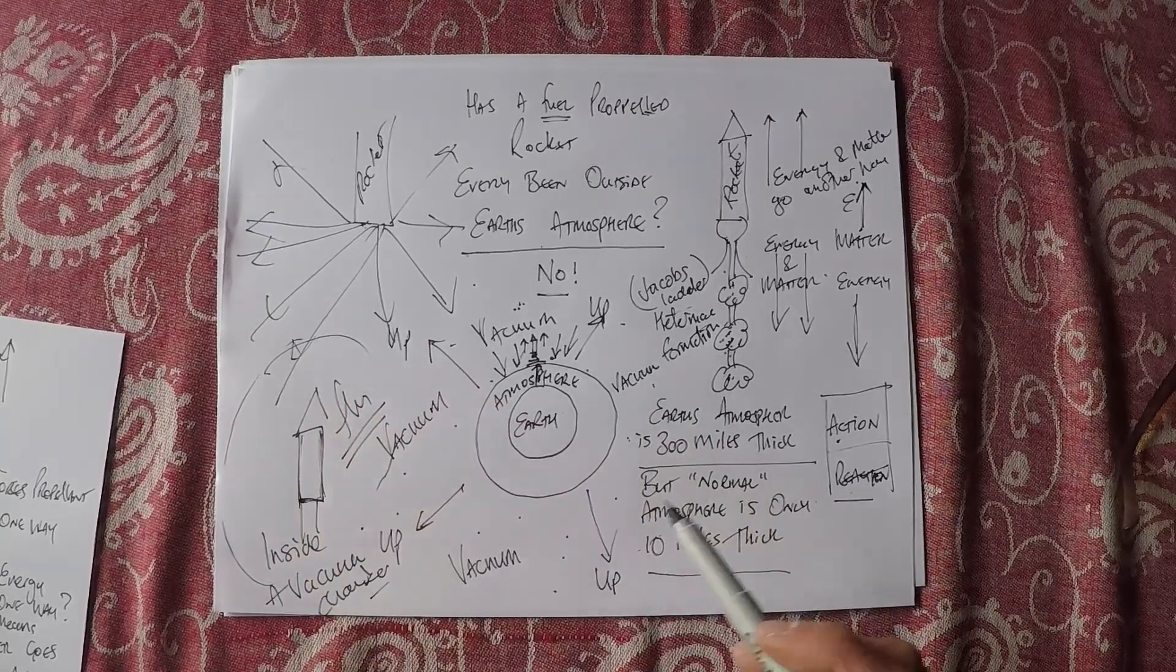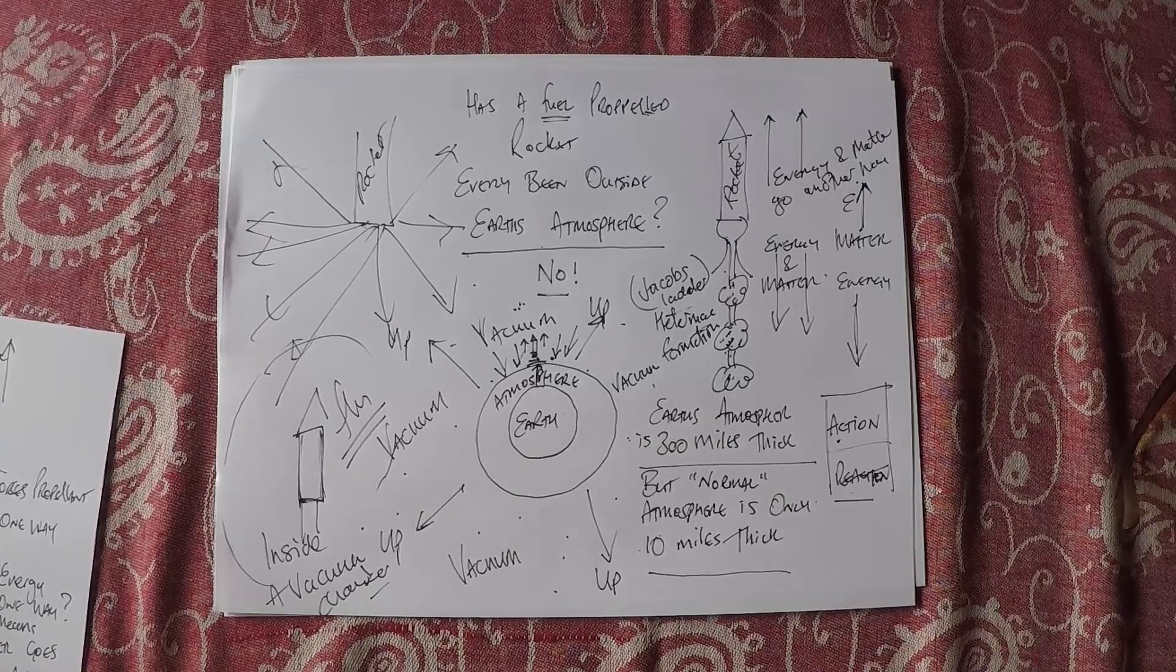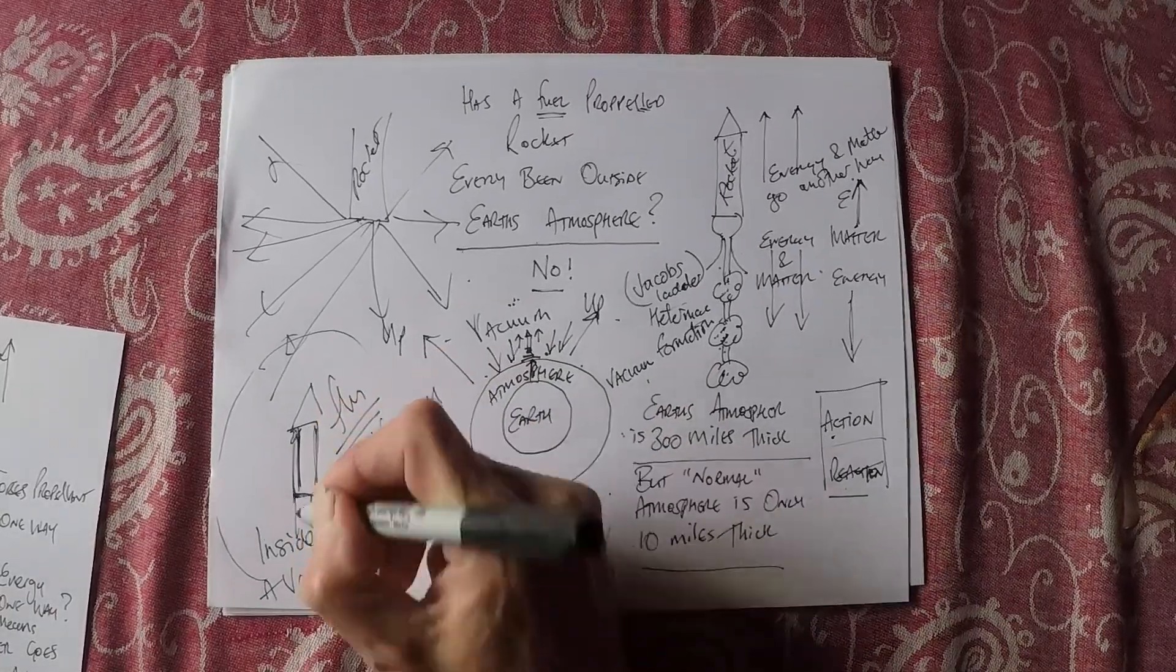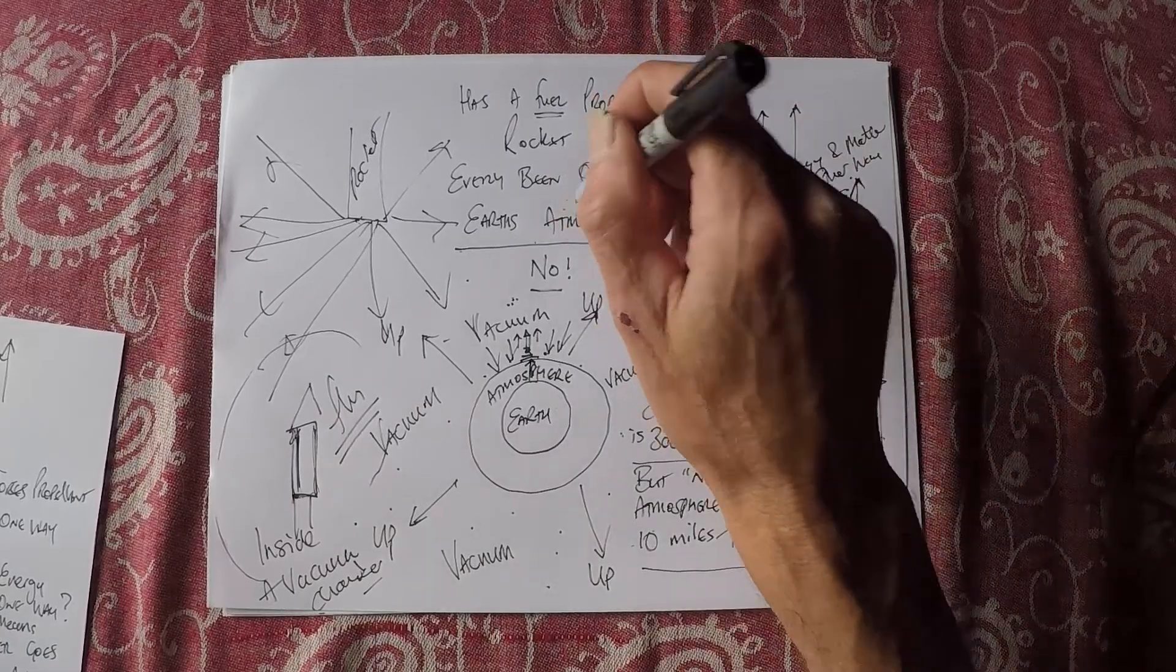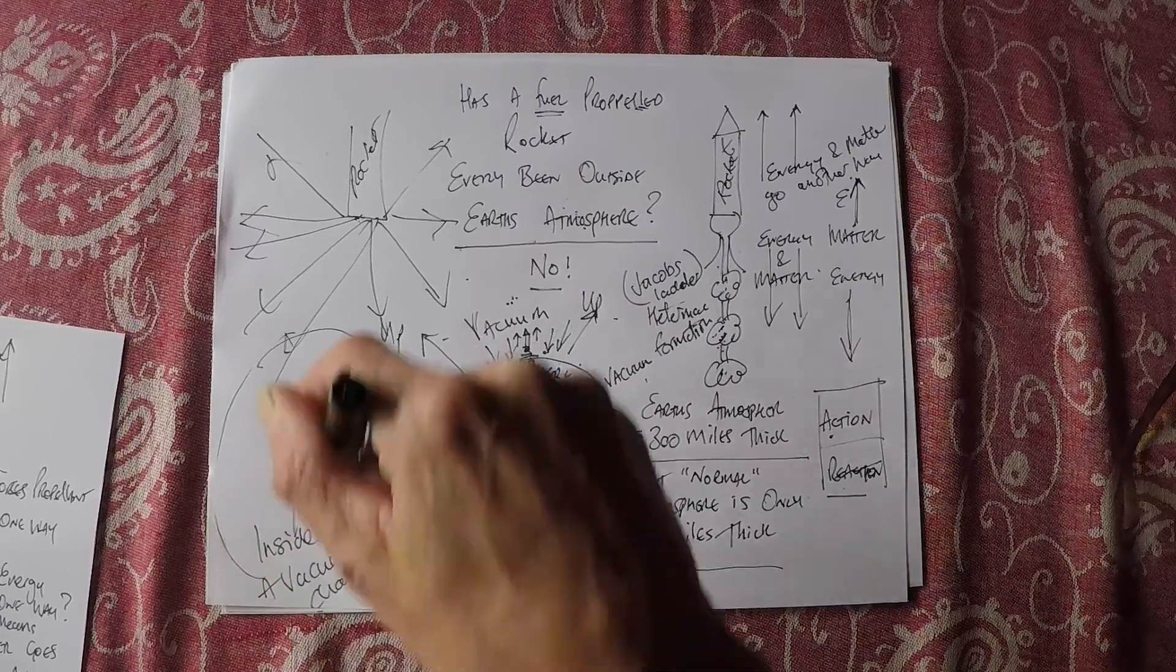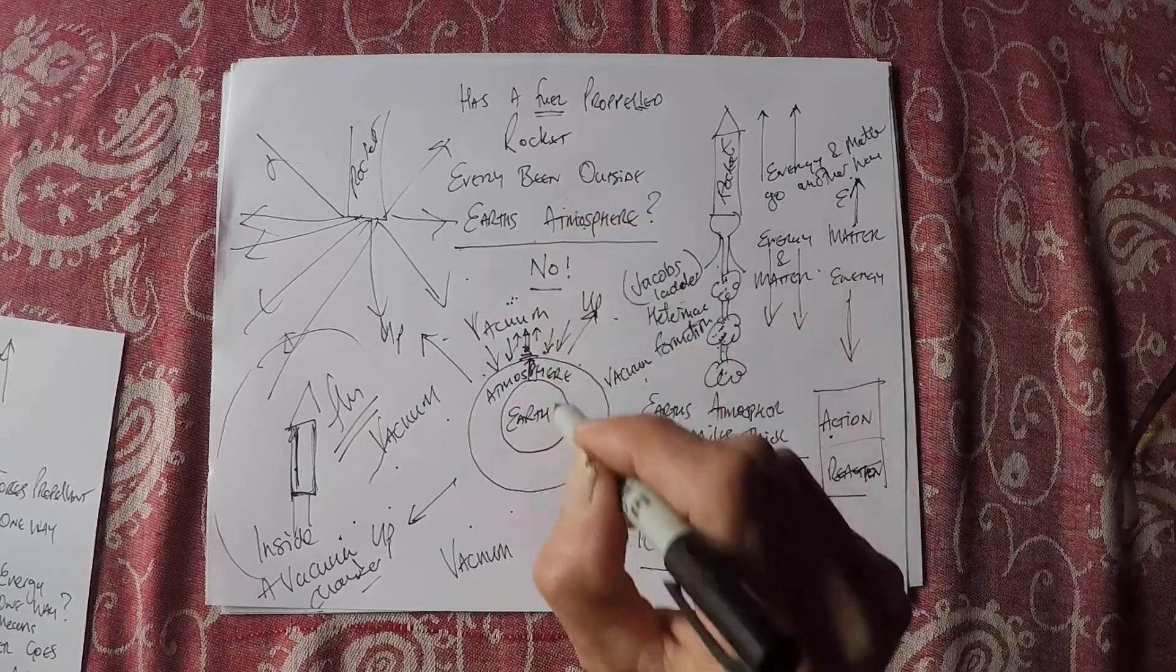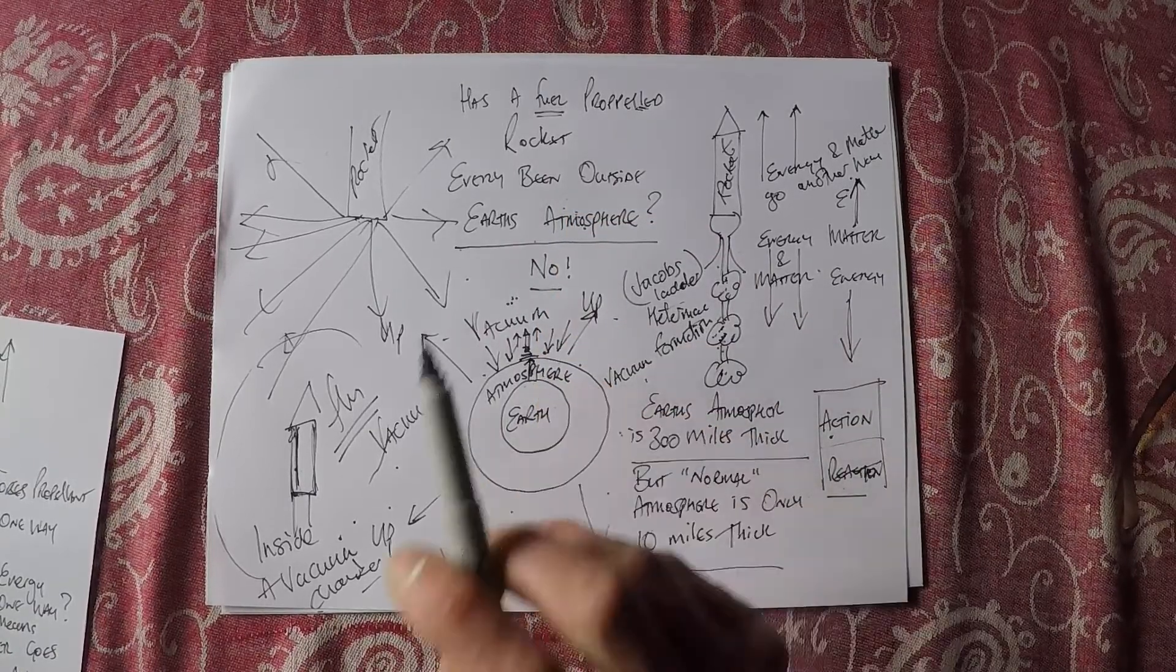Because it should be very easy. And so if you know anybody that has anything to do with science or up in the echelons of the elite who could hire out that vacuum chamber, you now know how to check whether or not a fuel propelled rocket has ever been outside Earth's atmosphere. And if this rocket doesn't shoot through the bloody ceiling, you know that nobody has been to the moon and nobody has been outside Earth's atmosphere.